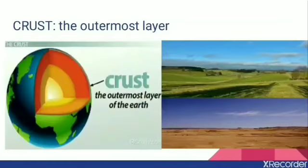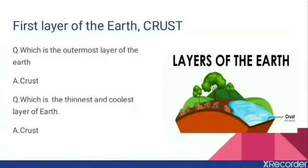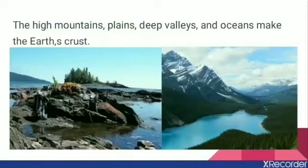Let us start with the first layer — the crust. The crust is the outermost layer of the Earth. As you can see in this picture, Earth consists of mountains, valleys, oceans, plains, plateaus, landforms, and waterforms. These different things make up our crust. All plants and animals are living on this outermost layer of the Earth — the crust. The crust is the outermost layer, the coolest layer, and also the thinnest layer of the Earth. High mountains, plains, deep valleys, and oceans all make up Earth's crust.